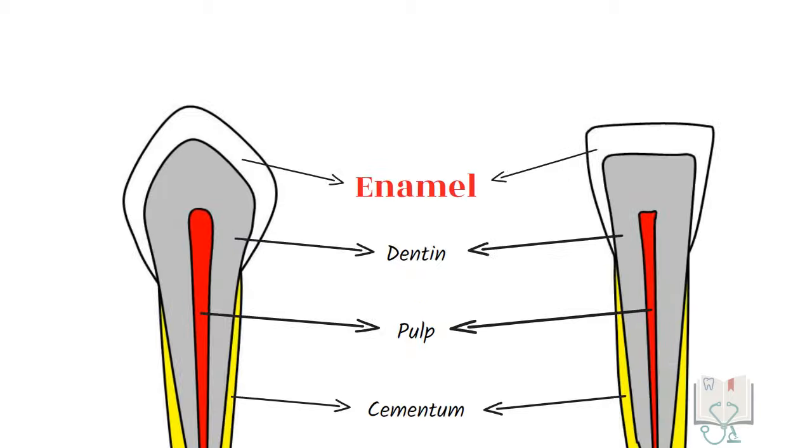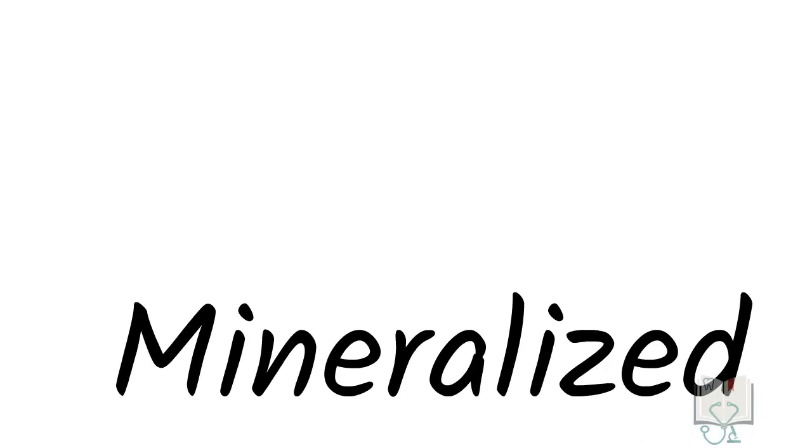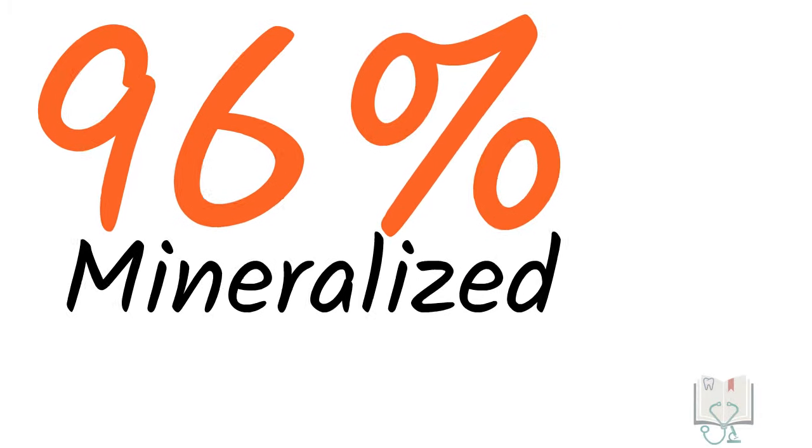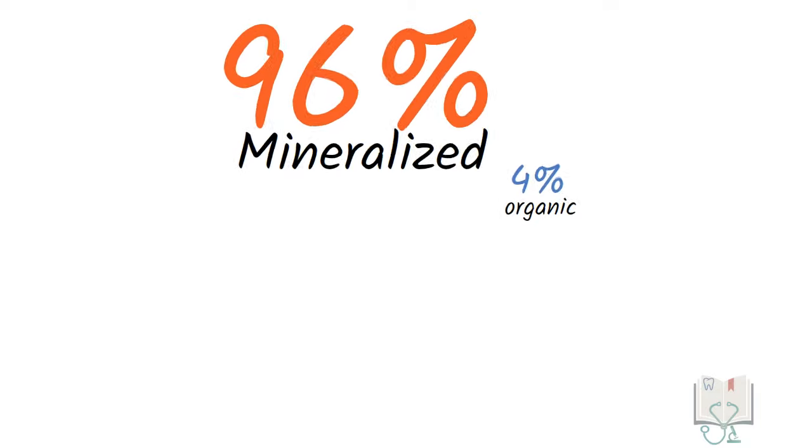Enamel is the tissue which forms a protective covering over the crown of a tooth. It is the hardest biological tissue of the body. This is because it is mineralized to 96% with organic matter being only 4%.